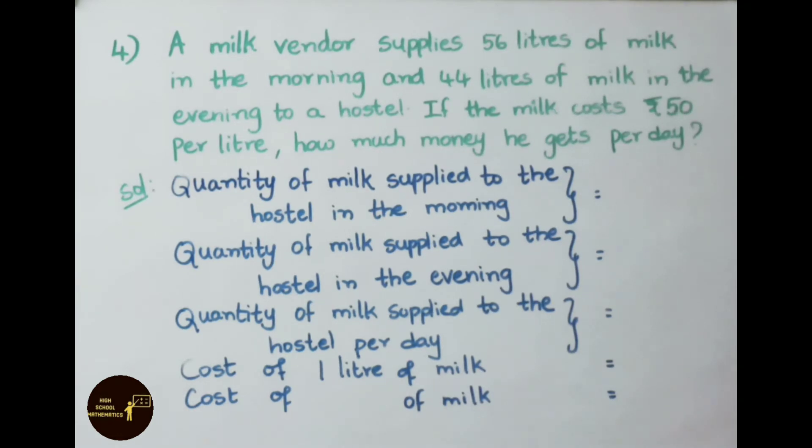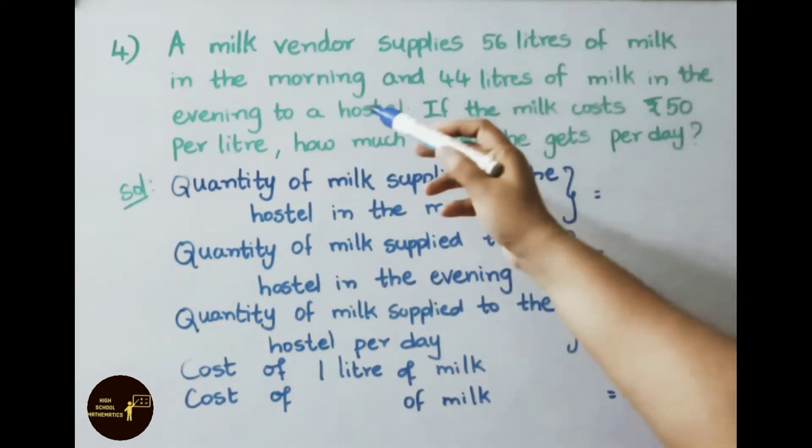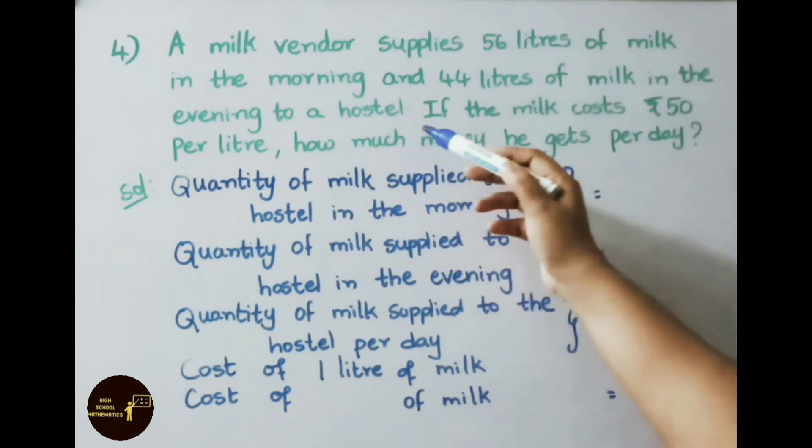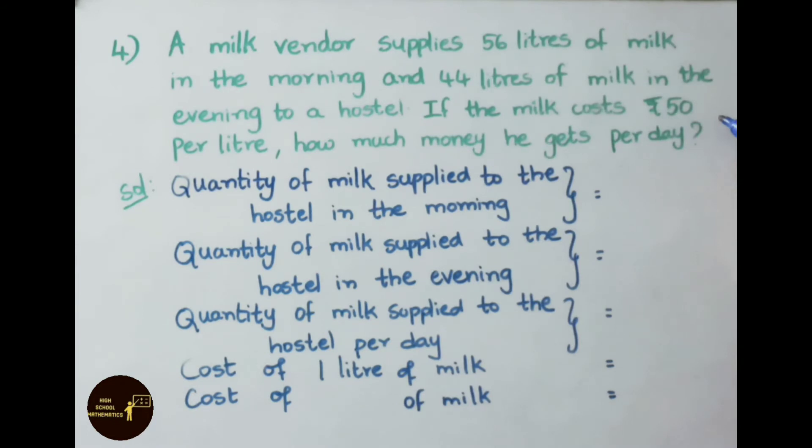See now fourth question. A milk vendor supplies 56 liters of milk in the morning and 44 liters of milk in the evening to a hostel. If the milk costs 50 rupees per liter, how much money he gets per day? Let us see the solution.